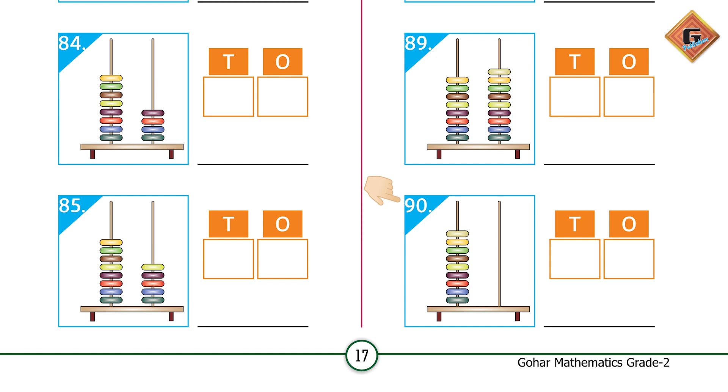After 89, when 9 comes it's again going to change. There is zero on the ones rod and nine beads on the tens rod. We write zero under ones and nine under tens, and the number name is 90.